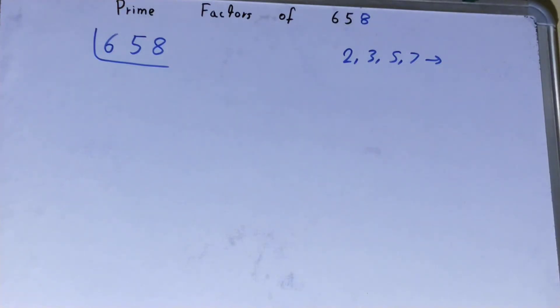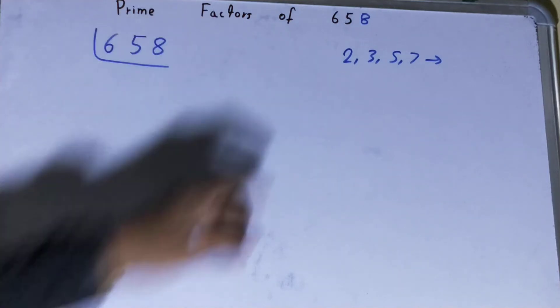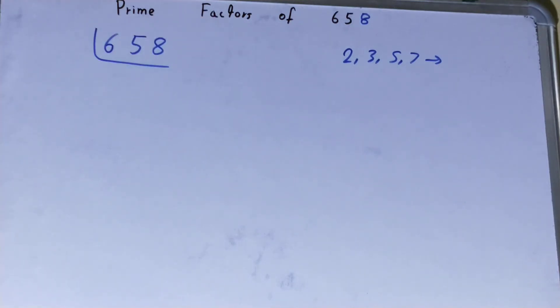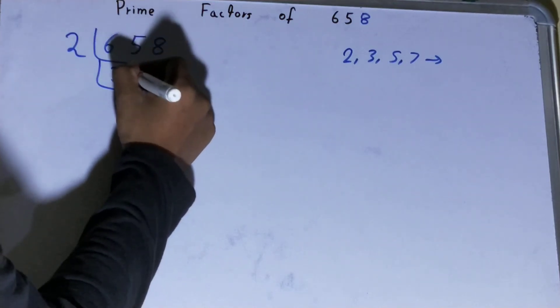We will be starting with the smallest or the lowest prime number we have, that is 2. Is 658 divisible by 2? Clearly it is because 658 is an even number. So divide it and you will be left with 329.